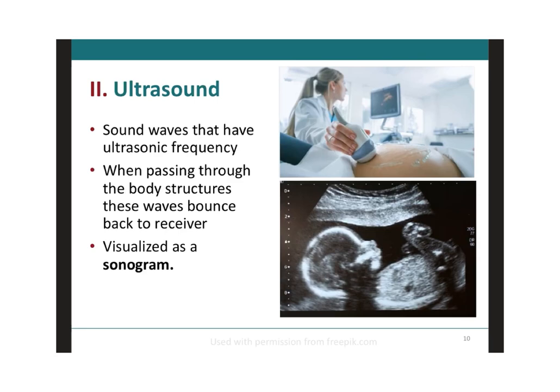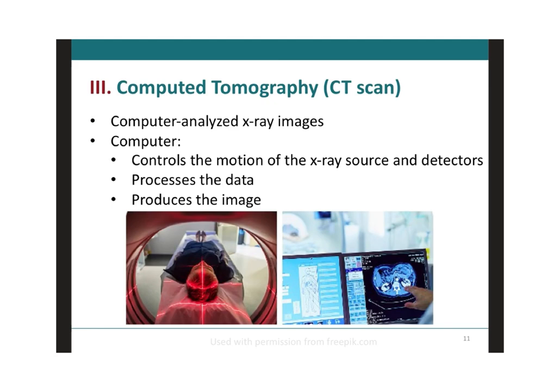An ultrasound is a procedure that uses high-energy sound waves to look at tissues and organs inside the body. It is especially used for pregnant women to observe the fetus. These sound waves make an echo that forms pictures of the tissues and organs on a computer screen, and you can clearly see the fetal formation on these images. A CT scan, or computed tomography, is similar to an X-ray and uses tomography — a technique for displaying a cross-section through the human body — in which a computer controls the motion of the X-ray source and detectors and then processes the data to produce an image.